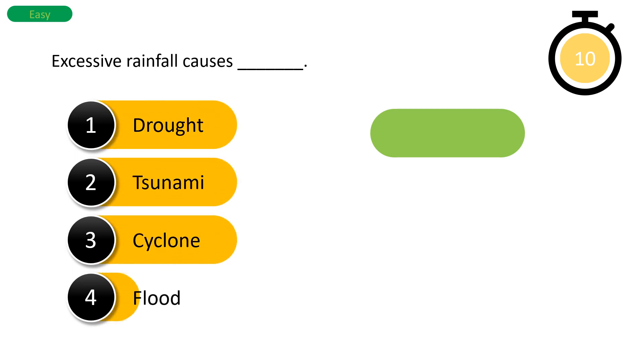The next question of the easy round is: excessive rainfall causes... Your options are drought, tsunami, cyclone, or flood. The time starts now. And the right answer is flood.